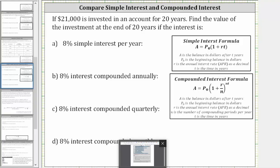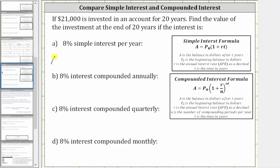For part A, because we have simple interest, we use the simple interest formula shown here on the right, where A, the amount after 20 years, is equal to P sub zero, the initial investment of $21,000, times the quantity one plus R times T, where R is the annual interest rate as a decimal and T is the time in years.